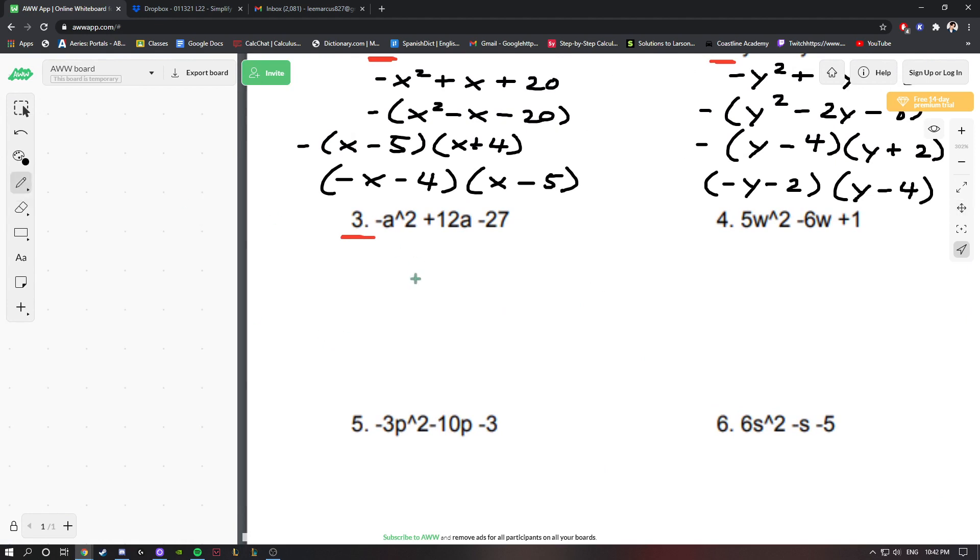Number 3, same thing. We have -a² + 12a - 27. Factoring out this negative is not mandatory, but I find it convenient because it's hard to forget about it if you leave it on the outside. Also, it's just easier for me personally to factor these inside values without the negative there. So we have a² - 12a + 27.